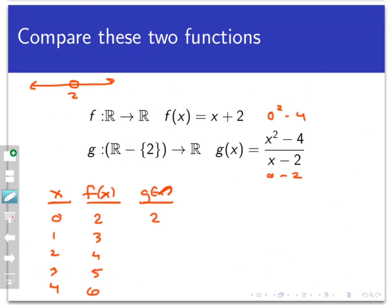If I put in one for x, I'd have one squared minus four over one minus two, that's negative three divided by negative one, which is three. If I chose to put in two, I would be mistaken because two is out of the domain — I'm going to put DNE for does not exist. Two is not an eligible candidate to be put into this function; I've specifically removed it from the domain. If I put in x equals three, I'd have nine minus four over three minus two, which is five. And if you put in x equals four, that would be sixteen minus four divided by four minus two, which is six.